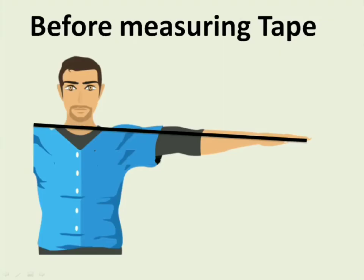Do you know when measuring tapes were not there, how people used to measure things? Most of the times they were using arm size. For example, forearms cloth, forearms rope — arm size is shown on the screen. But the problem was arm size used to change as per the person. Sometime it's long and sometime it's short. Now thanks to measurements, there is no confusion.